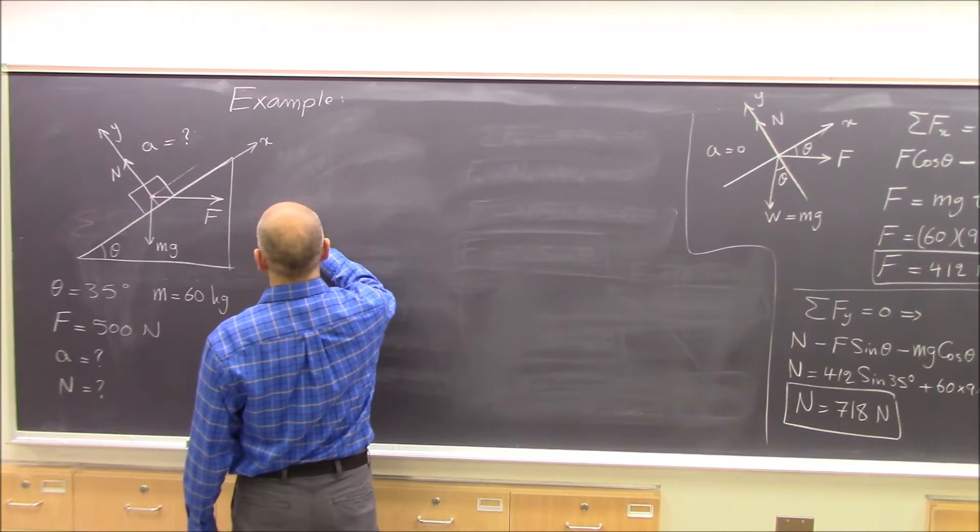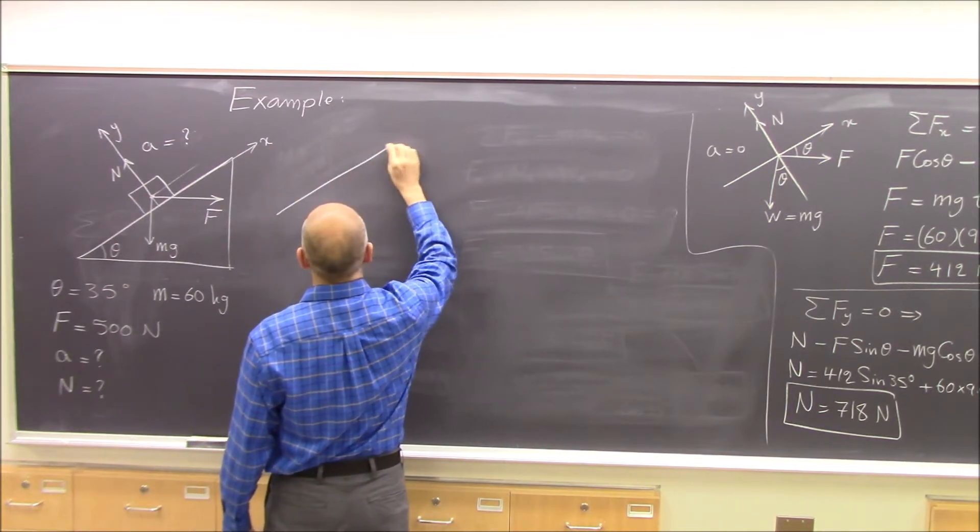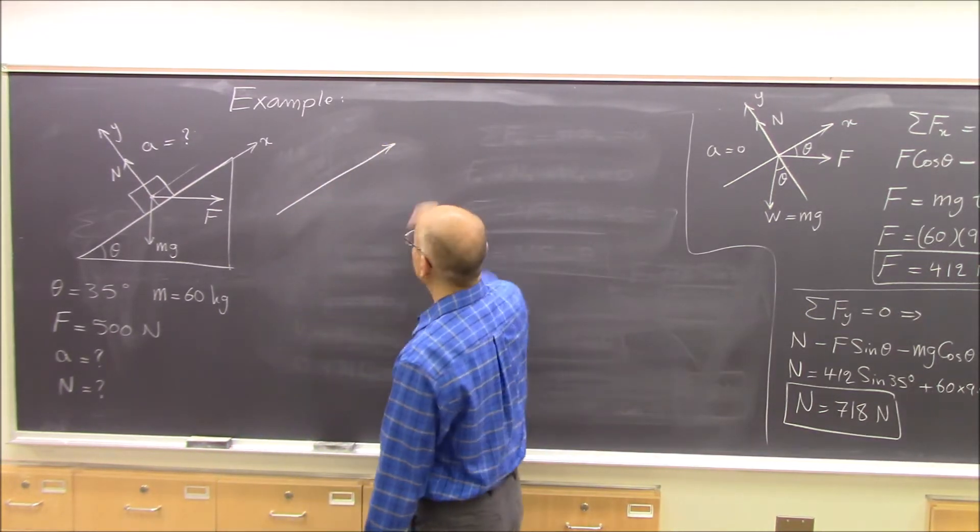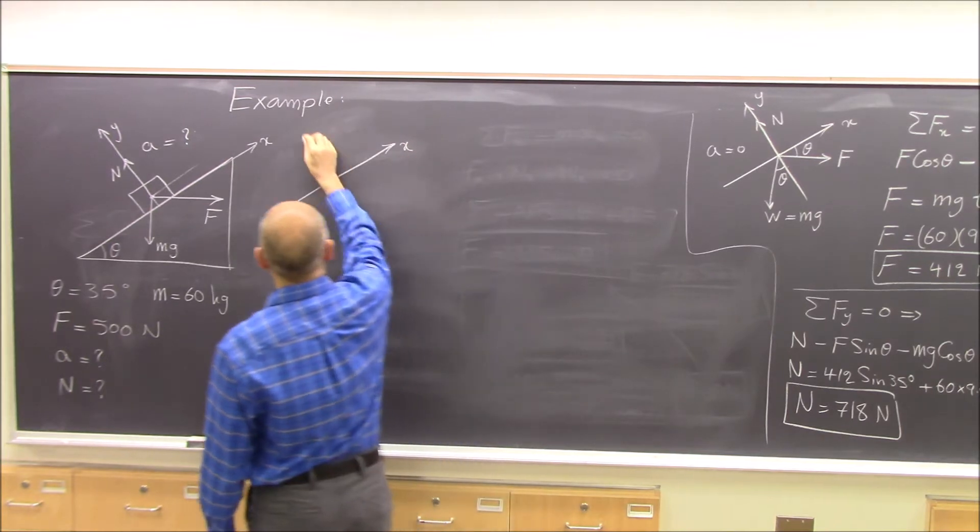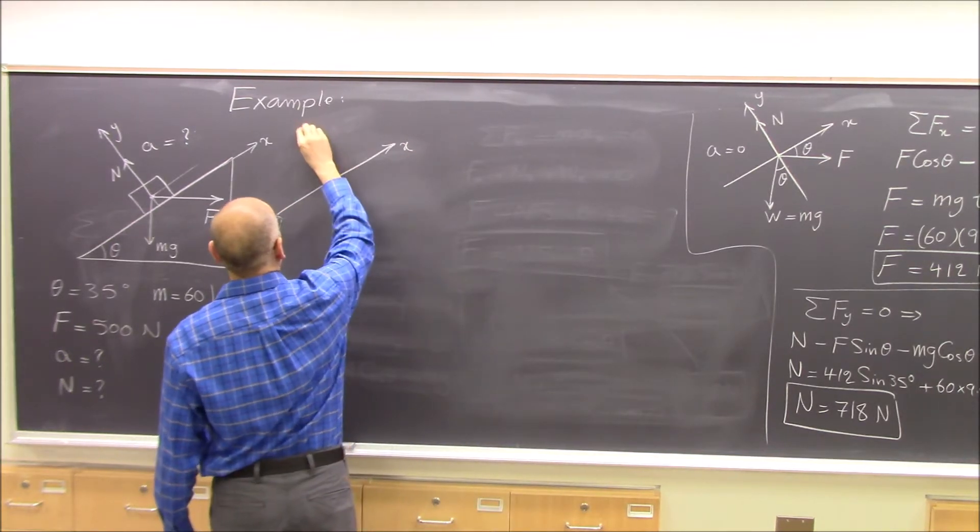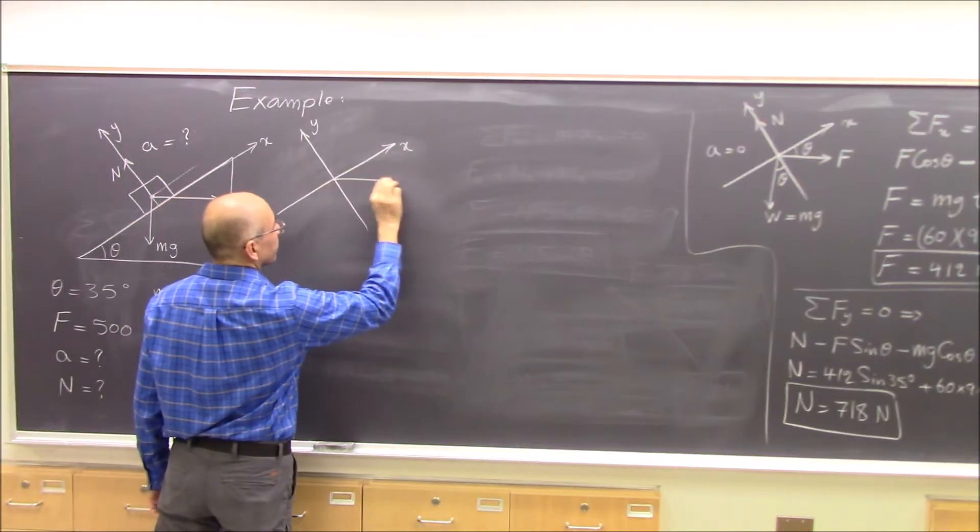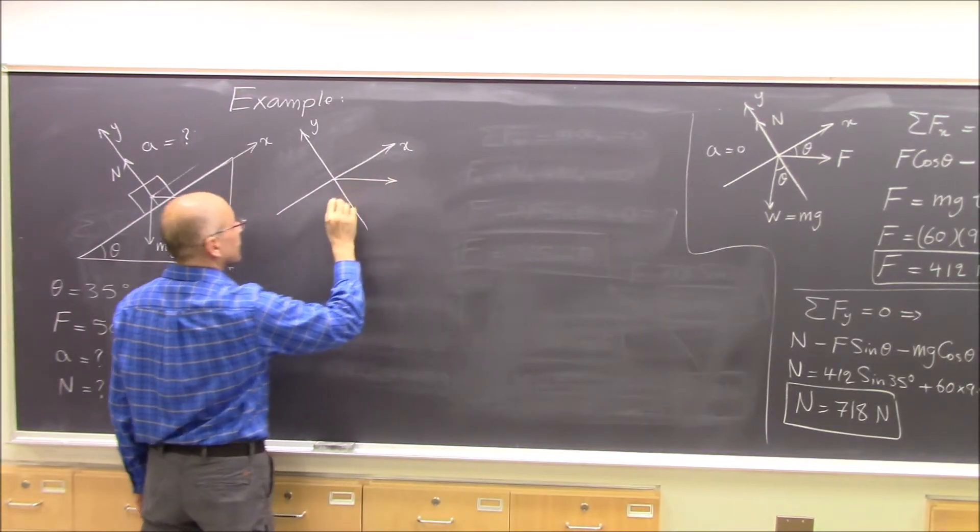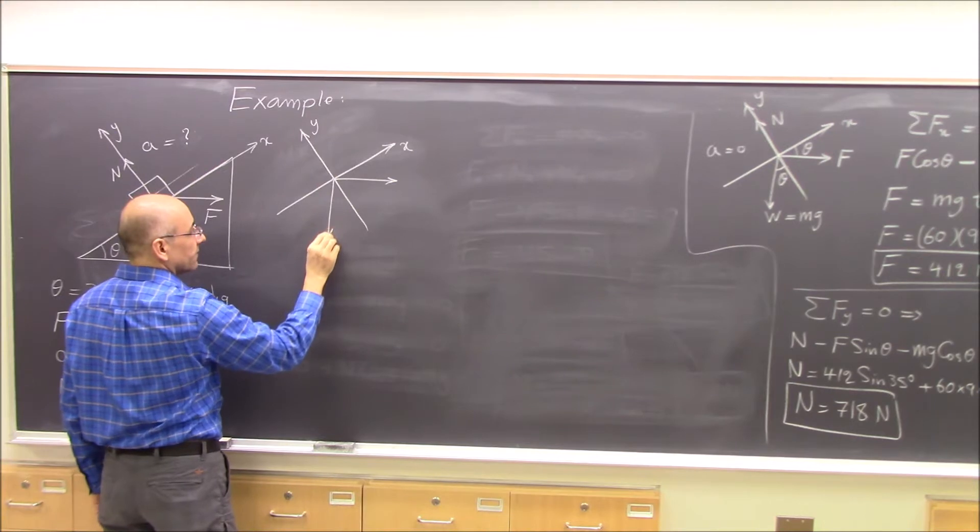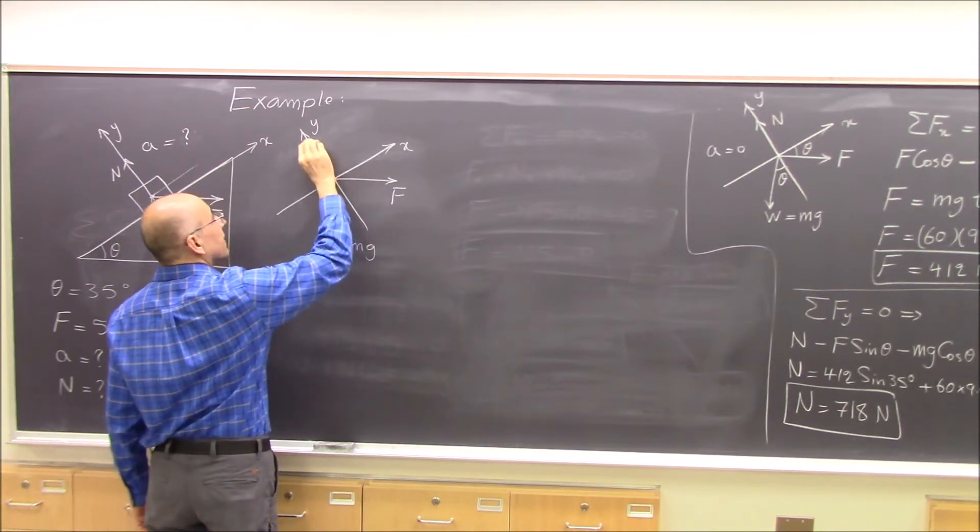So free body diagram, it's very important. Free body diagram, x-direction, y-direction. There are three forces: F is horizontal and Mg is vertical, and normal force is along the y-axis.